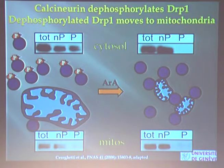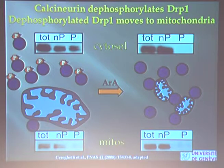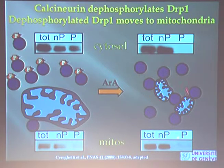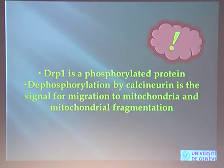What we found is that DRP1 is a phosphorylated protein — it has phosphate groups attached. These phosphate groups are taken away by calcineurin in the presence of arachidonic acid, which we showed increases calcineurin activity. This dephosphorylated DRP1 moves to the mitochondrial outer membrane, oligomerizes, and you have mitochondrial fragmentation. So dephosphorylation of DRP1 by the phosphatase calcineurin is the signal for cytosolic DRP1 to migrate to mitochondria and induce mitochondrial fragmentation.